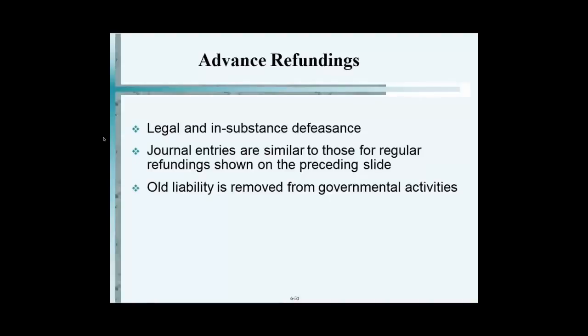Basically what this is: if you have bonds which are coming to you in the future — say you have a million dollars outstanding — and you sign an agreement where you cannot pay them off early, what you can do is deposit enough money to pay them when they come due. That's called bond defeasance. There's legal defeasance and in-substance defeasance, but basically what it is, is you have satisfied the obligation. It's almost like paying the bonds off, because you have the resources — you put them aside in the debt service fund, and when they come due, they'll be paid.